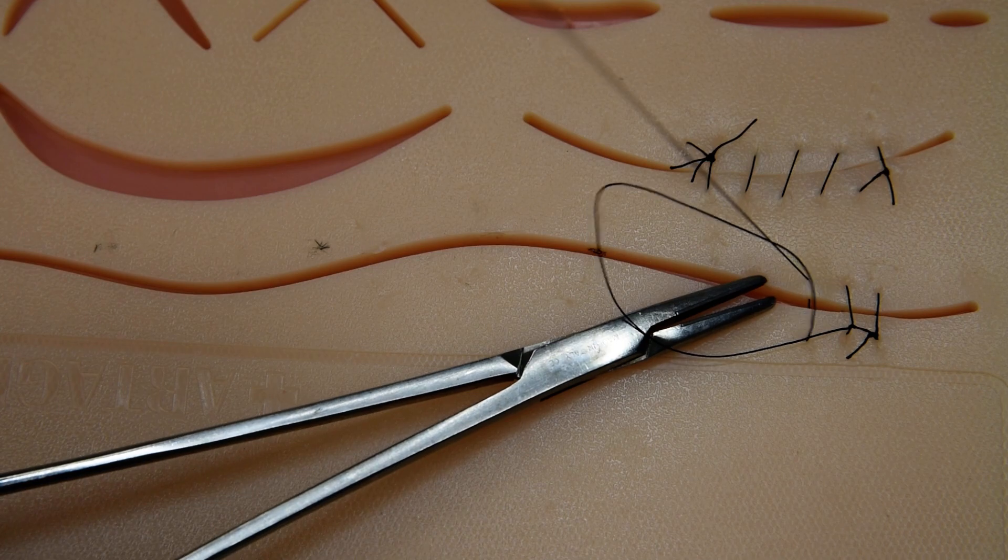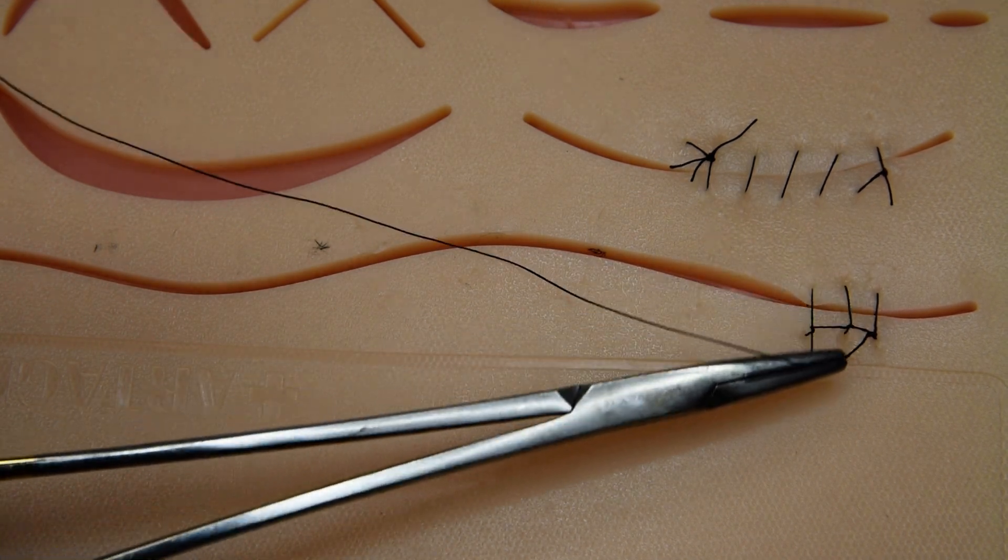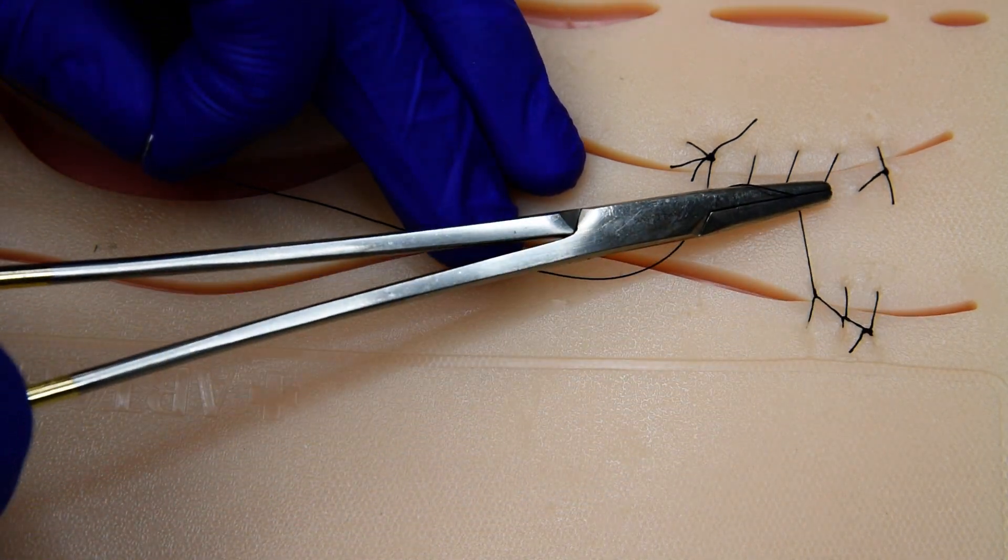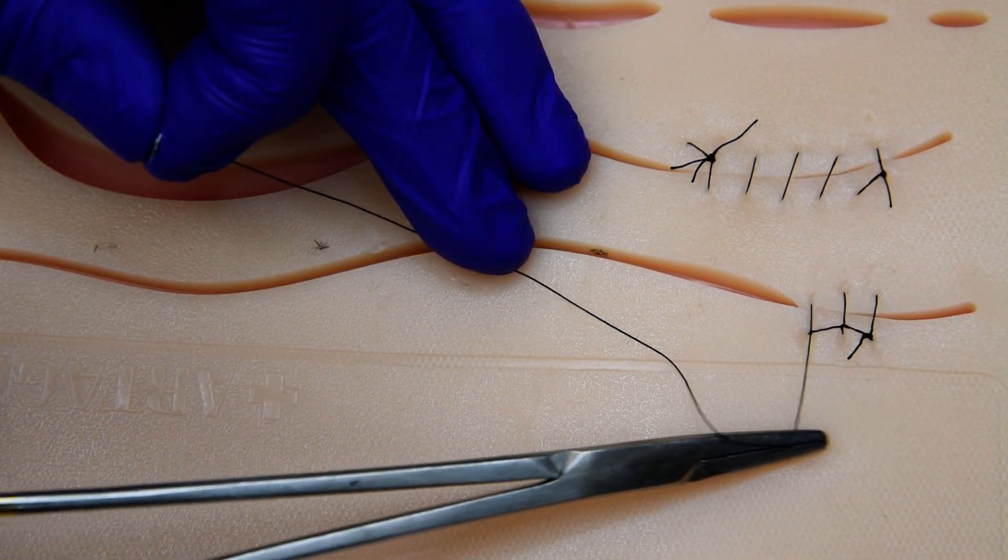and as the loop gets close, we tighten it, rock it across the incision, and lock it to the buccal side.